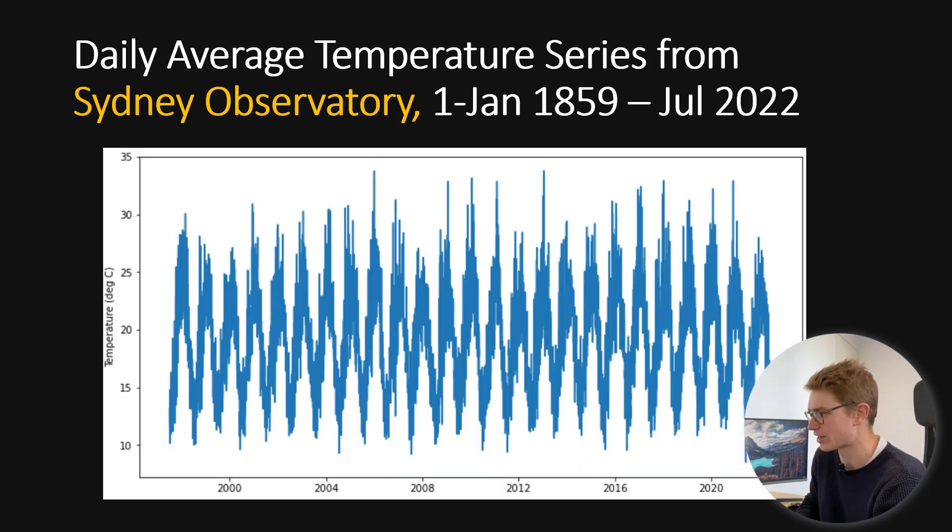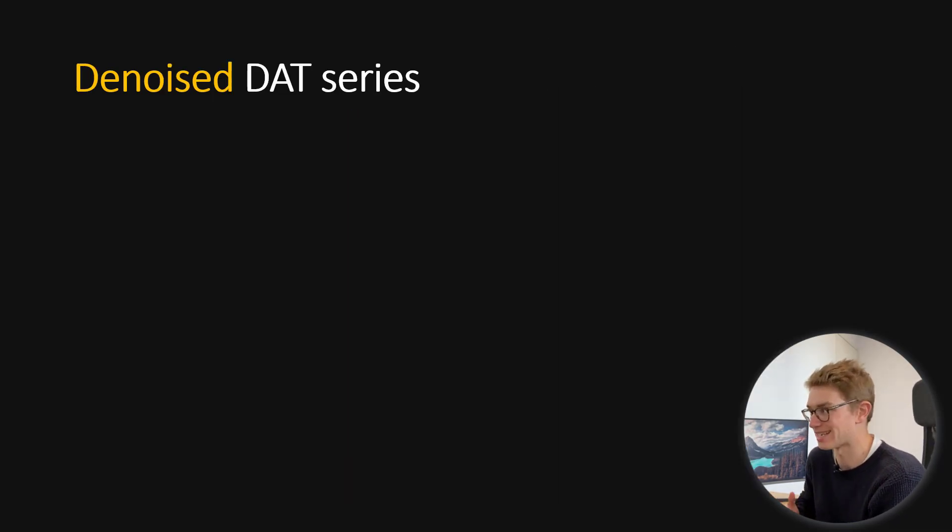The temperature series that you can see here is just plotted from the late 90s through to today. And what you'll notice is that we have quite a lot of variation in noise. So, the first thing we're going to do is actually denoise this daily average temperature series.